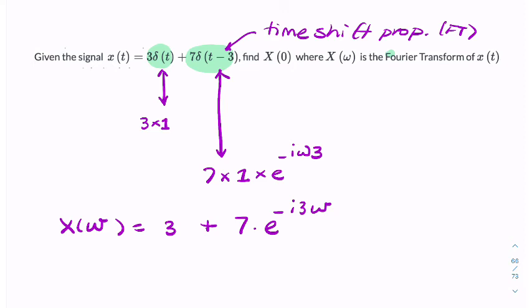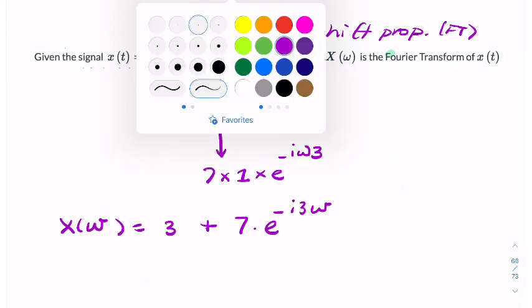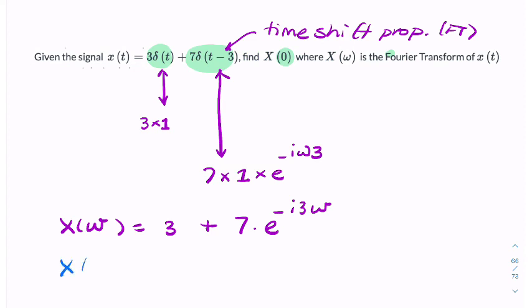And the question, conveniently, is asking for X of 0. So we just need to plug 0 into there. I can say X of 0 equals 3 plus 7 times e to the 0, which is 10.